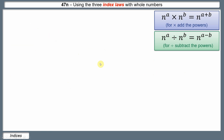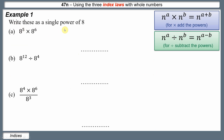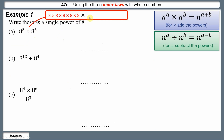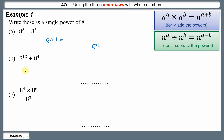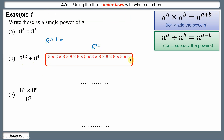Let's put these two rules into practice. First: 8 to the 5 times 8 to the 6 — using the multiplication rule, add the powers: 5 plus 6 equals 11, giving 8 to the power of 11. Second: 8 to the power of 12 divided by 8 to the power of 4 — using the division rule, subtract the powers: 12 minus 4 equals 8, giving 8 to the power of 8.